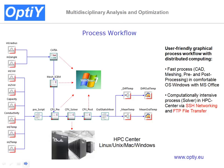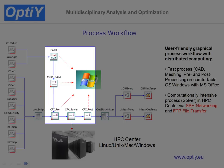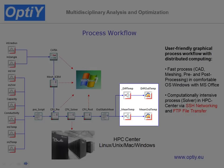OptiWire starts a loop of several computing processes, which can be distributed via network on different computers. First, OptiWire sets the parameters and changes the geometry in CATIA, meshes the geometry with ICM, and runs a fluid dynamics simulation with CFX. After the finished simulation, OptiWire collects the output parameters and builds the response surface of the output parameters.